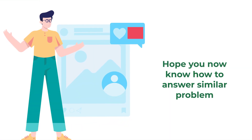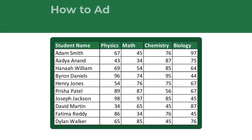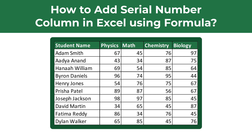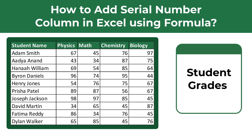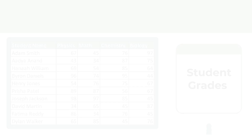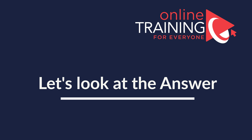Here is an interesting question you frequently see on the test. You're presented with a set of data and need to add a serial number column using an Excel formula. In our case we are presented with student grades information, and for each student we need to add a serial number. Give yourself a little bit of time to see if you can complete the steps. I am going to move forward and reveal the solution. The first step is to add a new column.